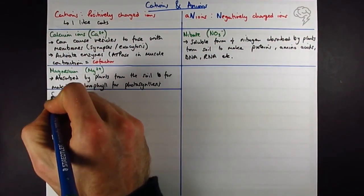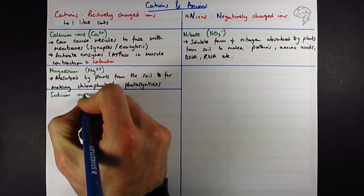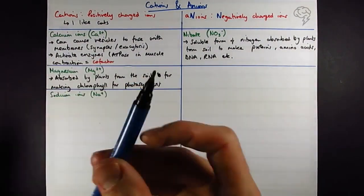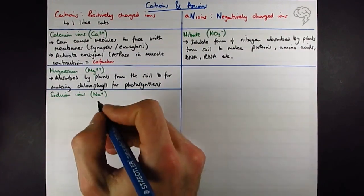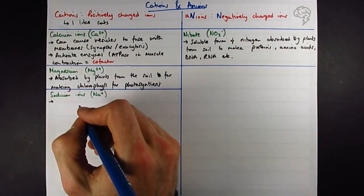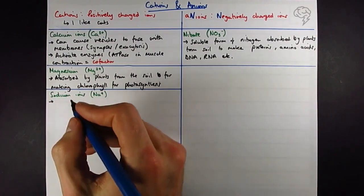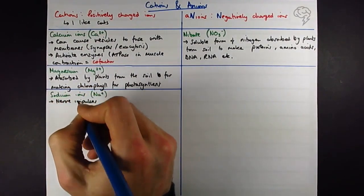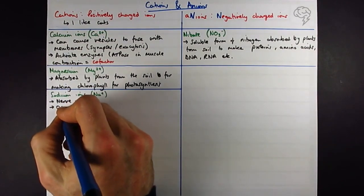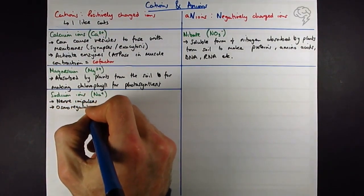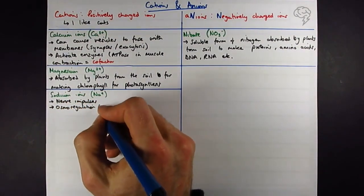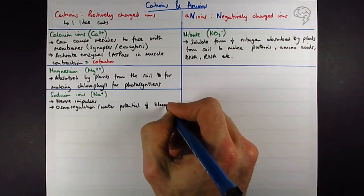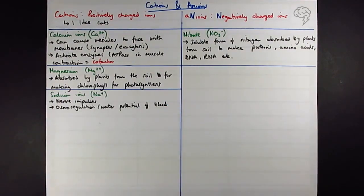These are Na+, you're probably pretty familiar with them by now. Good news is you're so familiar that you don't have to do too much learning of them. So we do some nerve impulses and water regulation or osmoregulation, the water potential of the blood.